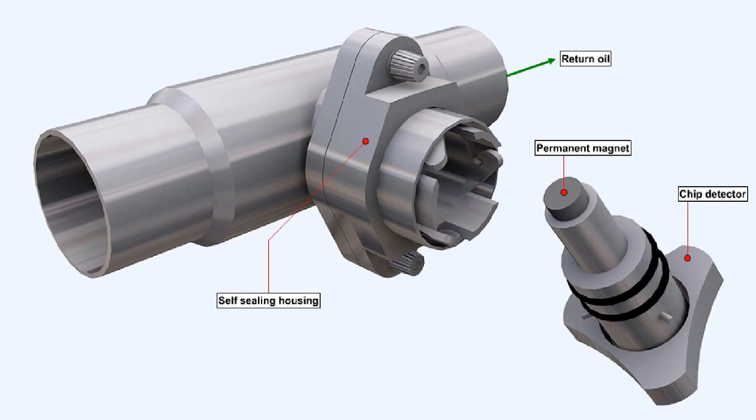The chip detector is retained in the pipeline by a bayonet fitting within a self-sealing housing. The fact that the valve housing is self-sealing means that the detector can be removed without any loss of oil.